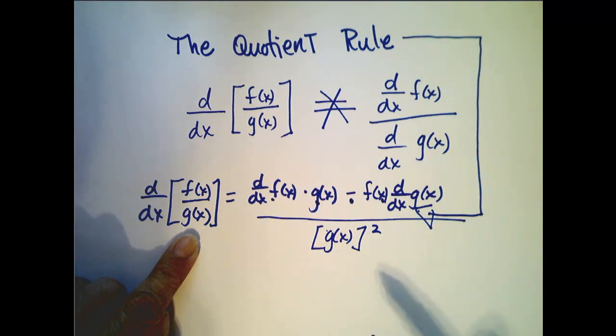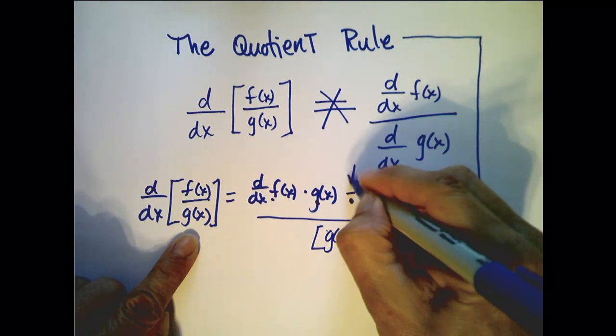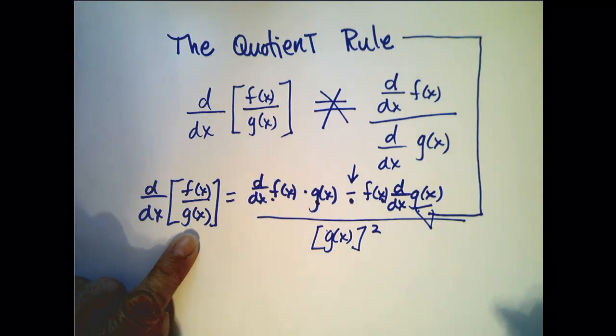Unlike with the product rule where it didn't matter which derivative you take first, in this case it does, because if you go in the wrong order you're going to differ by a sign.